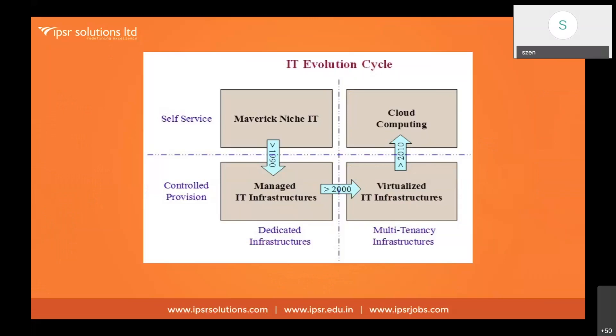This is the IT evolution cycle. Before 1990, we were using self-service — just a computer device that was not networked, using its own resources like storage and computing power. Then we moved into managed IT infrastructures, with dedicated infrastructure for storage, dedicated servers for running applications, database servers, and controlled provisioning.